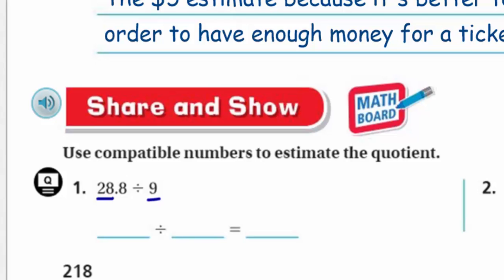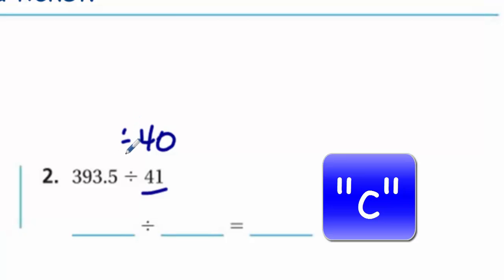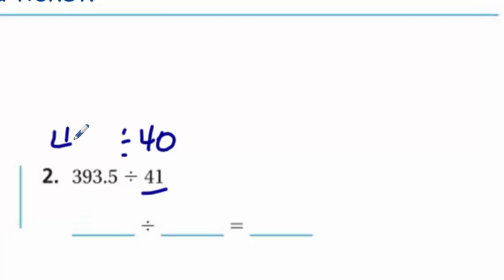For number two, 393.5 divided by 41, we have a two digit divisor. We want to rename the divisor first, so let's make that easy - that would be 40. Now I'm working in reverse and I can see right away if I were to change 393 to 400, that would be really compatible. 400 divided by 40 - that would be 10.